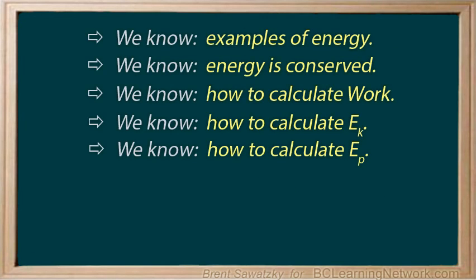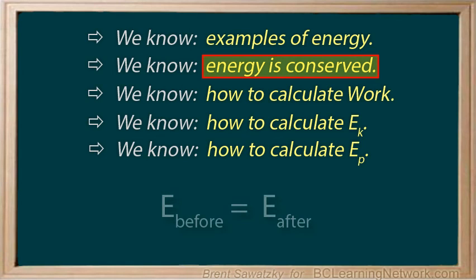In this tutorial, we combined all of our energy knowledge to solve real-life problems. Knowing that energy is conserved, we can always start our problems with e before equals e after. We consider what's happening before and after, or at the start and end of our problem. If there's velocity, then we know we put ek for kinetic energy. And, if there's stored energy, then we know we put ep for potential energy. We should always stop and consider whether there's significant amounts of energy converted to other forms. When we rearrange our formula, we can substitute numbers and then solve the problem.